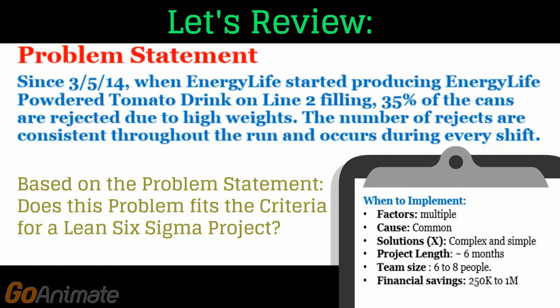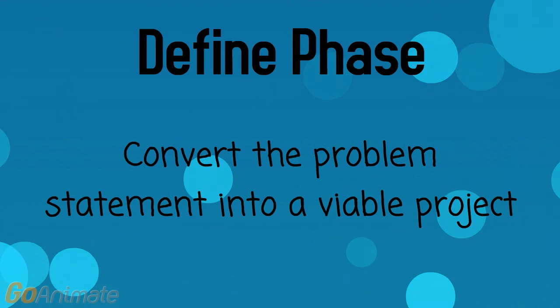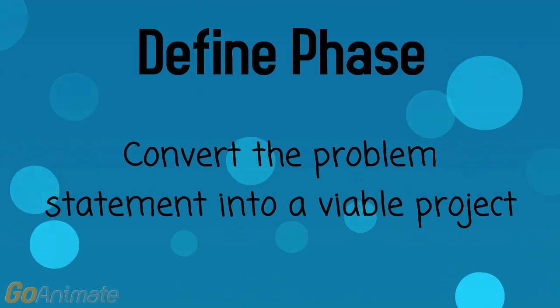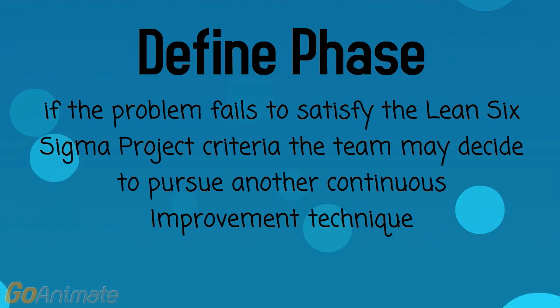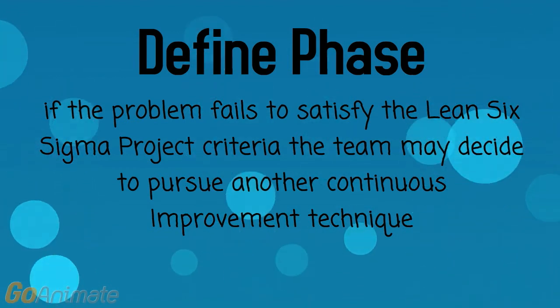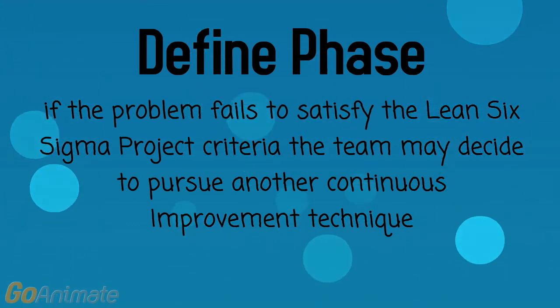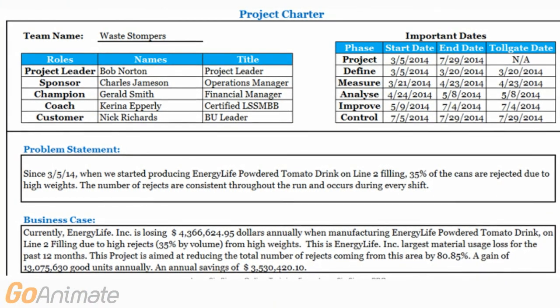Based on the problem statement, does this problem fit the criteria for a Lean Six Sigma project? It appears to. Therefore, the team will launch the Define Phase. In the Define Phase, we address the Lean Six Sigma criteria questions by converting the problem statement into a viable project. If the project fails to satisfy the criteria, the team may decide to pursue another continuous improvement technique such as Root Cause Analysis, Kaizen, Just Do It, Equipment Reliability Project, Breakdown Analysis, or SMED.